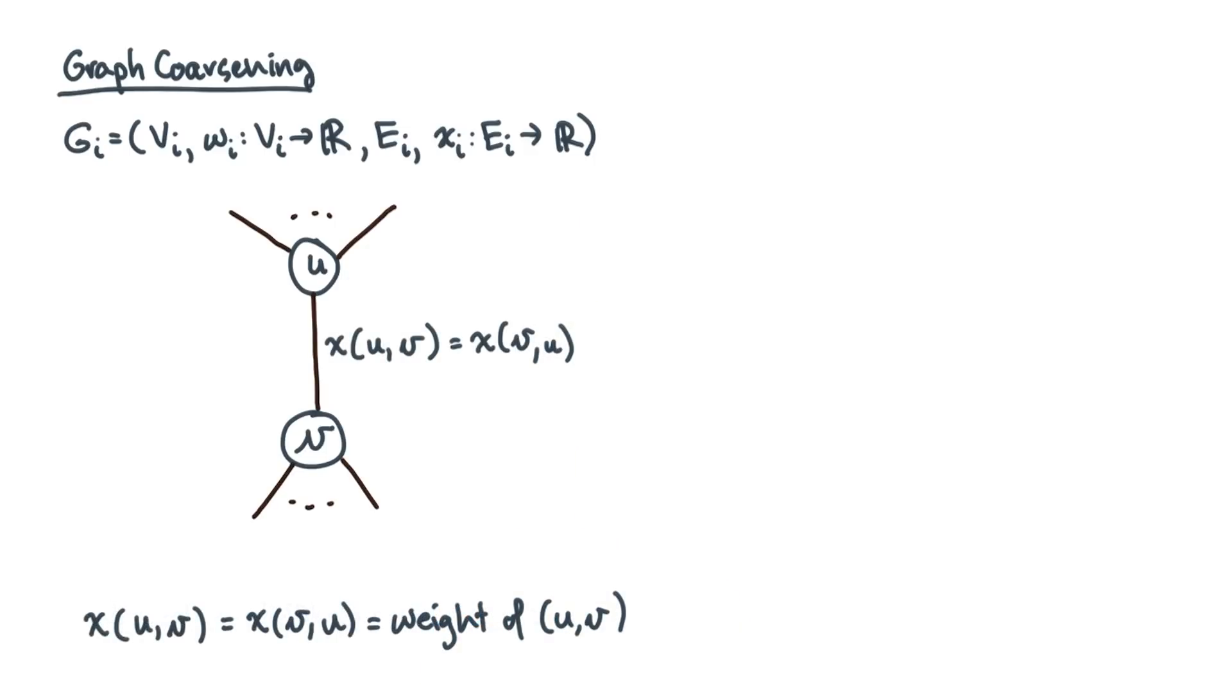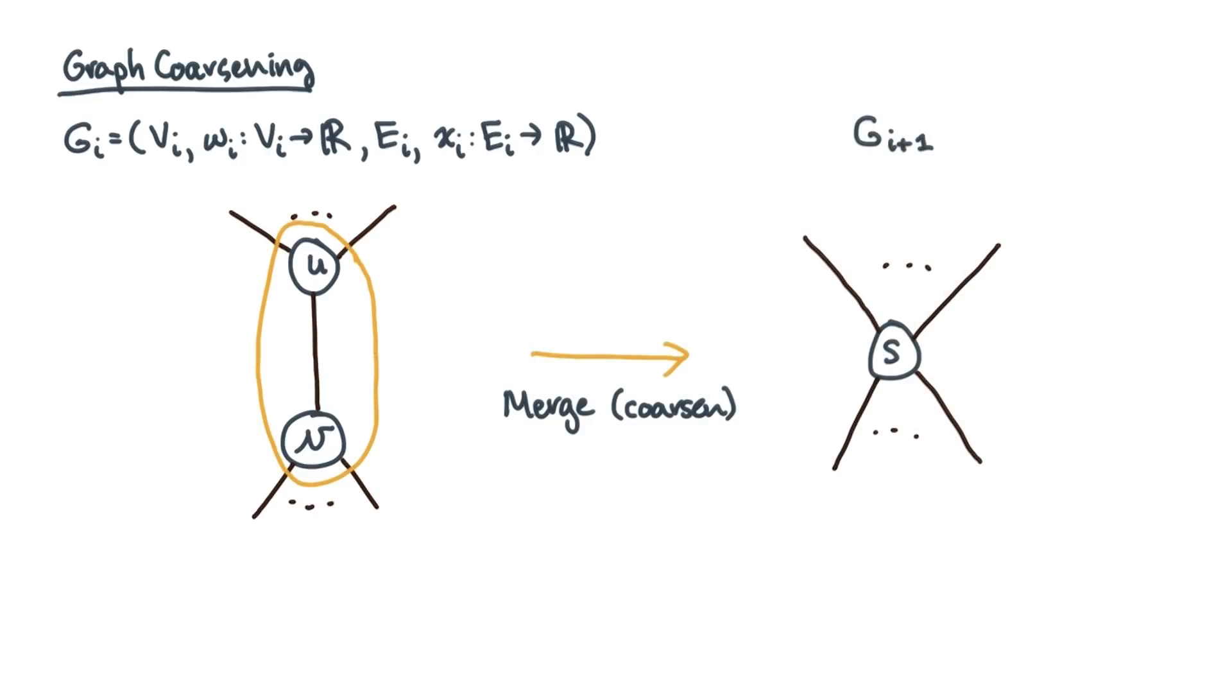Now let's suppose that we join just these two vertices into a super vertex. Let's call this new vertex s. Its weight is the sum of the weights of u and v. Now what about the edge weights?